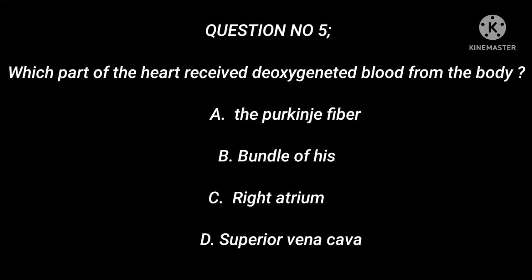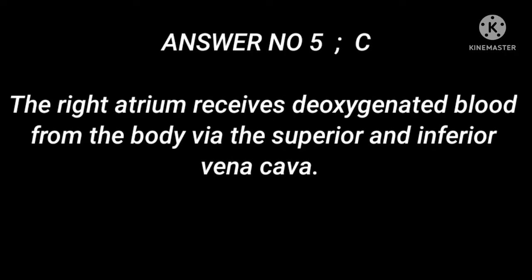Question number 5: Which part of the heart receives deoxygenated blood from the body? A. The Purkinje fibers. B. Bundle of His. C. Right atrium. D. Superior vena cava. Answer number 5: C. The right atrium receives deoxygenated blood from the body via the superior and inferior vena cava.